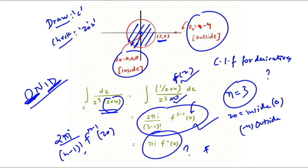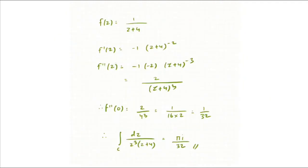To find f''(0), first find f(z) = 1/(z + 4), then differentiate to get f'(z), then differentiate again to get f''(z), and finally substitute z = 0. From f(z) = 1/(z + 4), take the first derivative.